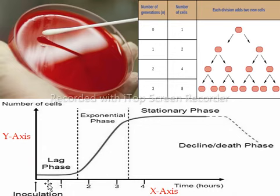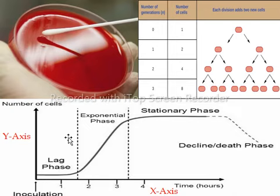The first growth phase is the lag phase. The lag phase represents a new environment for the bacteria. Bacteria adjust to the new nutritional environment and adapt to the new culture media, because the bacteria have just been plated on the culture plates. This is the lag phase.